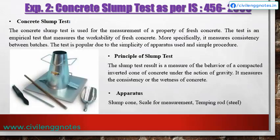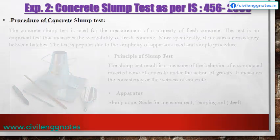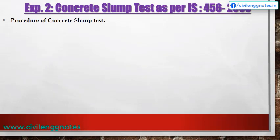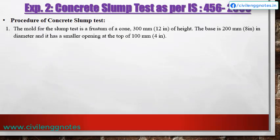Apparatus used: A slump cone, a scale for measurement, and a steel tamping rod. The mold for the slump test is a frustum of a cone of 300 mm height; the base is 200 mm in diameter and has a smaller opening at the top of 100 mm.